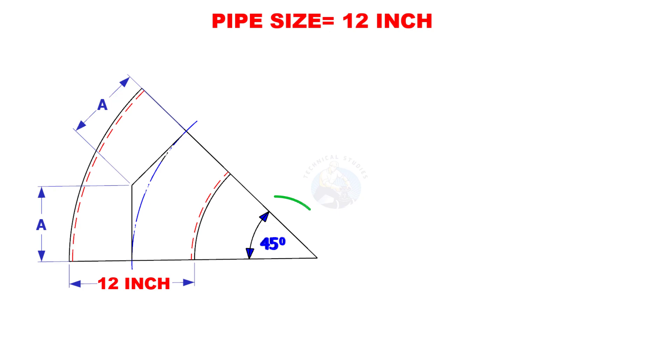Try one more example. The NPS is 12 inches and the degree is 45. Here the constant is 15.9. Multiply 12 by 15.9. The center to end distance is 190.8 millimeters.